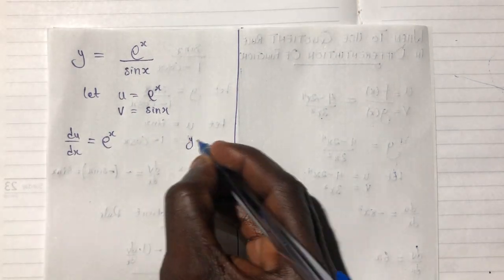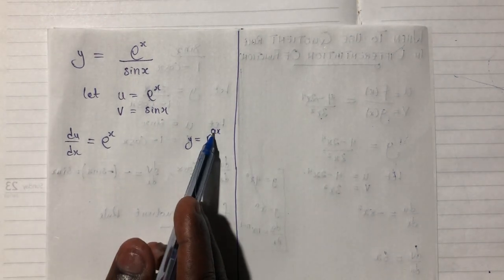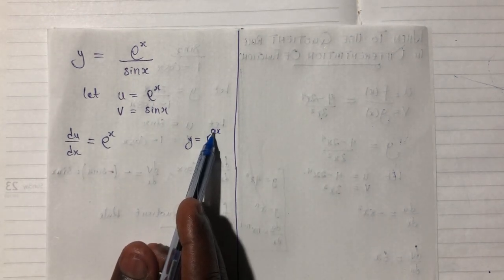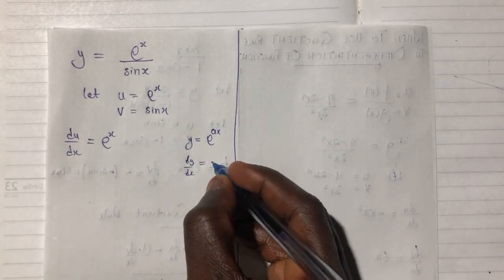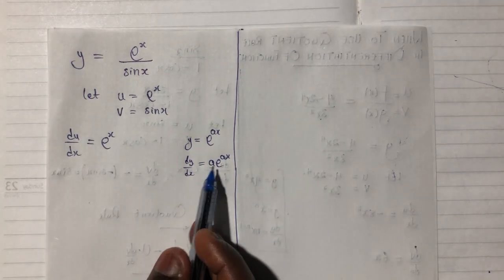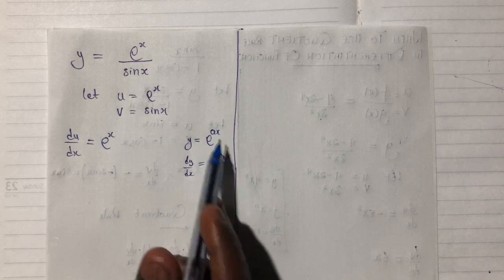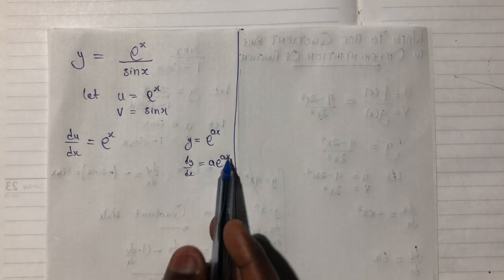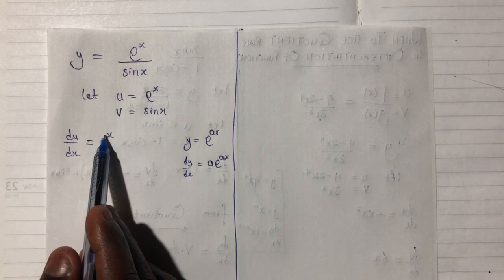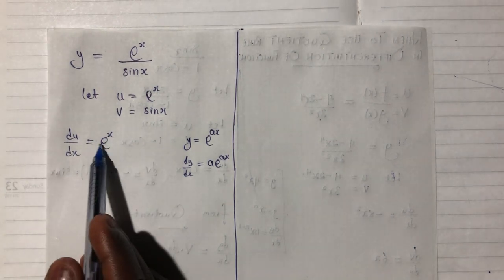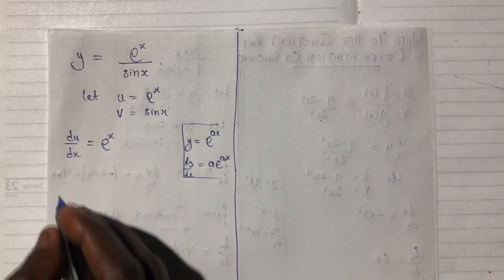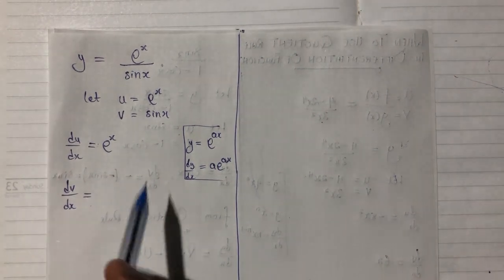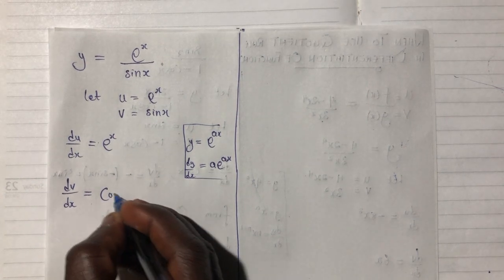Then we differentiate u with respect to x and v with respect to x. So du/dx gives e to the power x. If y equals e to the power ax, the derivative gives a·e^(ax) — you multiply the coefficient of x by e and keep the same power. Here a was 1, so du/dx is e^x. The derivative of v, dv/dx, gives cos(x), since the derivative of sin(x) is cos(x).